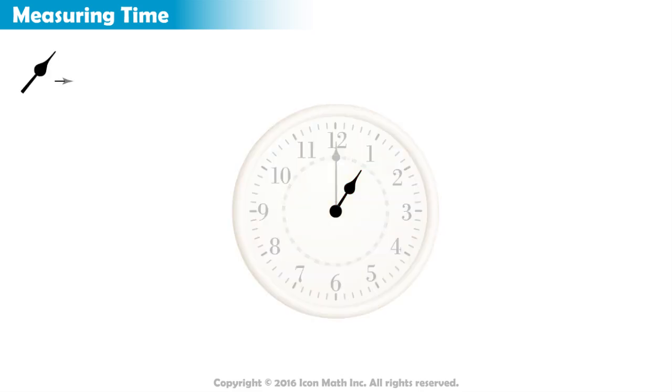The short hand tells the hours, and the long one tells the minutes. The hours hand starts at 12, and goes in a circle through 1, 2, 3, until it goes back to 12.